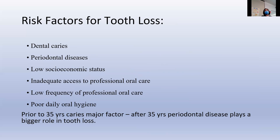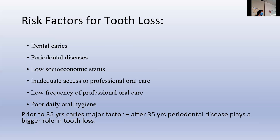Risk factors for tooth loss include oral cancer and corresponding treatments, oral injuries, dental caries, periodontal disease, low socioeconomic status, inadequate access to care, low frequency of dental visits, and oral health literacy for daily oral hygiene — which reflects back to caries and perio. Prior to 35 years of age, tooth loss is predominantly driven by caries. After 35, it's predominantly driven by periodontal disease. Of course that's not a hard and fast rule, but in general, younger populations' tooth loss usually relates to caries.